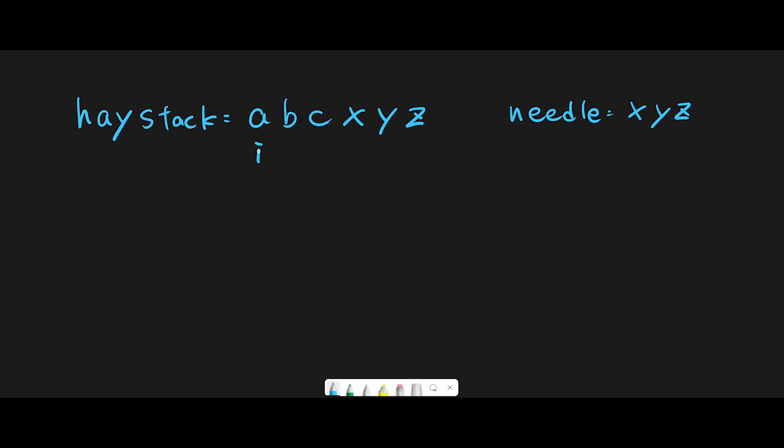So haystack starts from current index and the endpoint is current index plus length of needle, which in this case is 3.